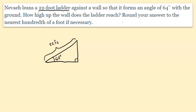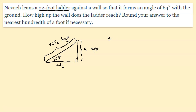How high up the wall does the ladder reach? We are trying to find the distance along the wall. Our reference angle is the 64-degree angle we're given. The unknown side — the length of the wall — would be the opposite side, the 22-foot ladder would be the hypotenuse, and the ground distance would be the adjacent side. We want the opposite side and we're given the hypotenuse, so we use the sine function.